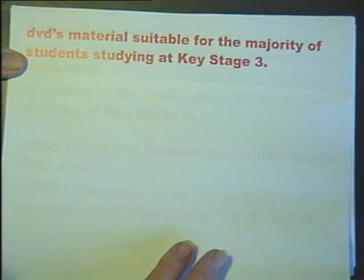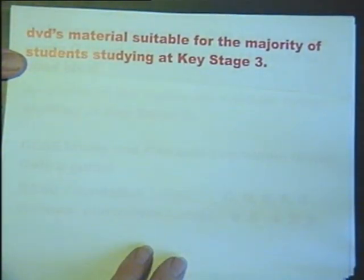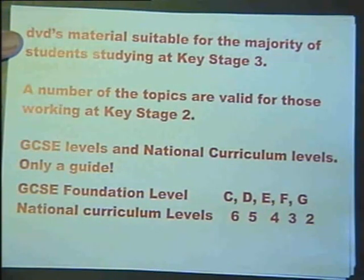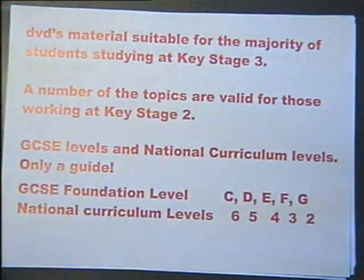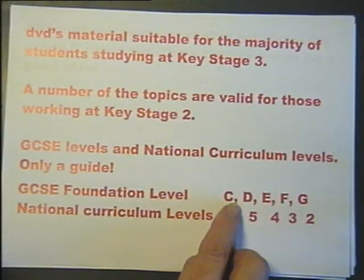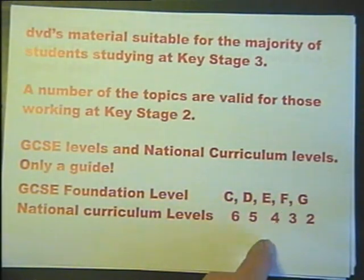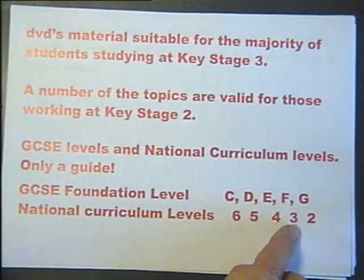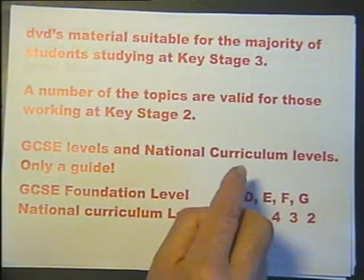This series of DVDs contains material more than suitable for the majority of students studying at Key Stage 3, and a number of topics covered are valid for students working at Key Stage 2. Here is a guide to GCSE levels and National Curriculum Key Stage levels — this is only a guide, as the National Curriculum levels do not match up exactly with GCSE grades. GCSE Foundation level grades C, D, E, F and G link, but not perfectly, to National Curriculum levels 6, 5, 4, 3 and 2 — levels studied by most of those at Key Stage 3 and a number of those at Key Stage 2.